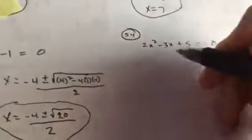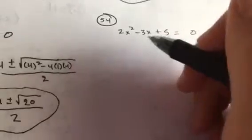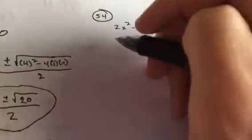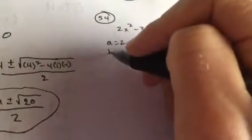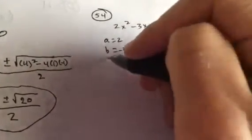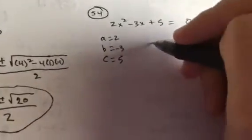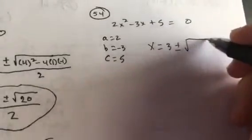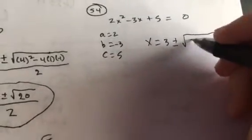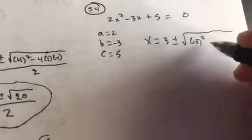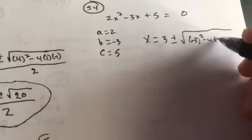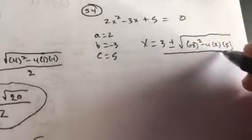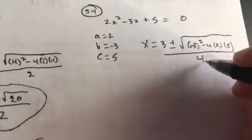Alright, take a look at 54. Really, any time, you know, you got a middle term and the number attached to x squared is not 1, you guys are probably going to use the quadratic formula. So this time, a is 2, b is negative 3, c is 5. You got x equals the opposite of b, so positive 3 plus or minus the square root of b squared. Put that in a parenthesis minus 4 times a times c